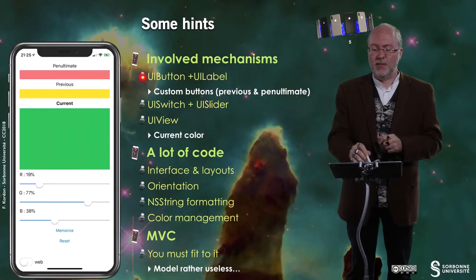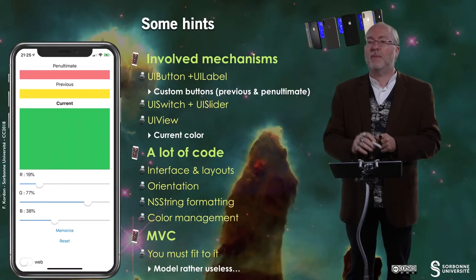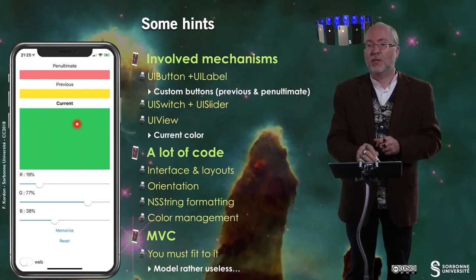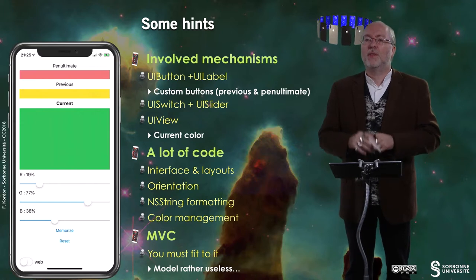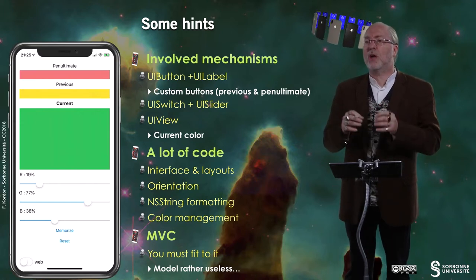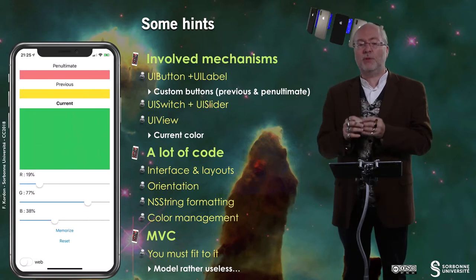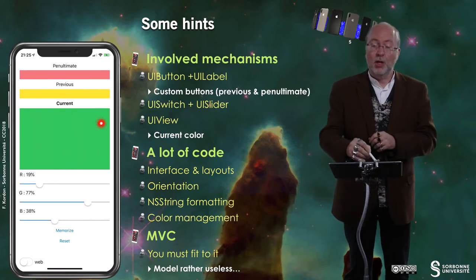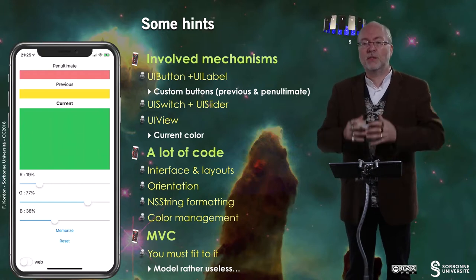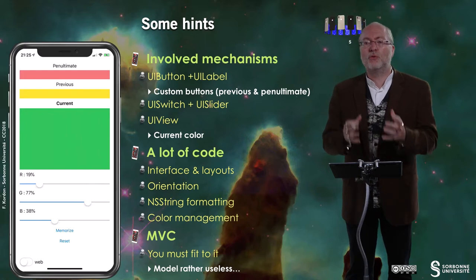I will give you a few hints. Here is a copy of the screen on an iPhone X. The involved mechanisms are UI buttons, UI labels, UI switch, UI slider, and a UI view. Remember, these are buttons. There is much more code than in the previous implementation because you don't have only to implement the actions, but you also have to implement the display of this layout. You must fit into the Model-View-Controller model.